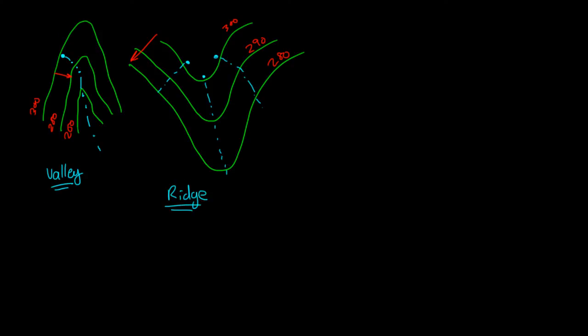When we identify a ridge, we draw a line — usually in black. The ridge starts at the highest elevation, the tip or top of the ridge, and we draw it perpendicular to the contour lines. This perpendicular notation denotes a ridge.